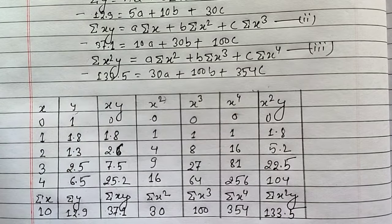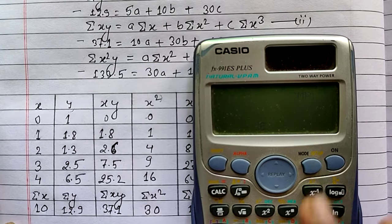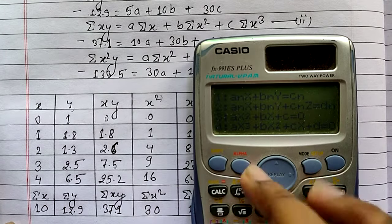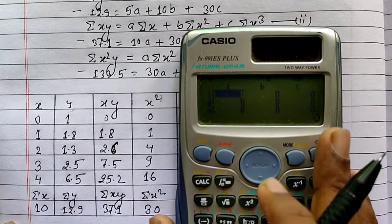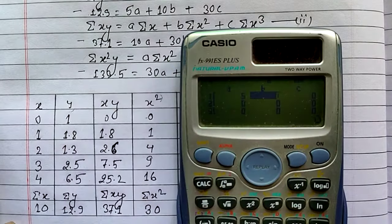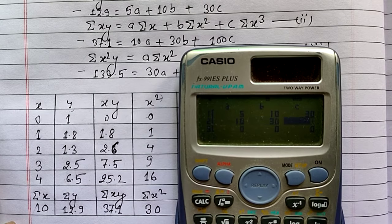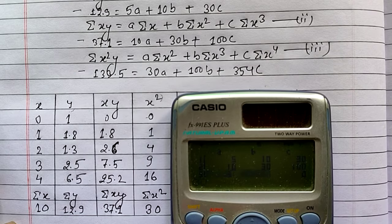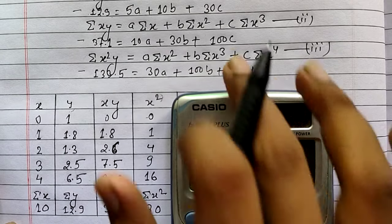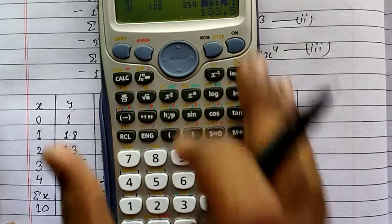For finding the solution, let's go to calculator mode 5, equation second, because it has three constants a, b and c. Go to option 2, then enter the values: 5, 10, 30, 12.9, then 10, 30, 100, 37.1, then 30, 100, 354, 133.5. After entering all values, press equals.